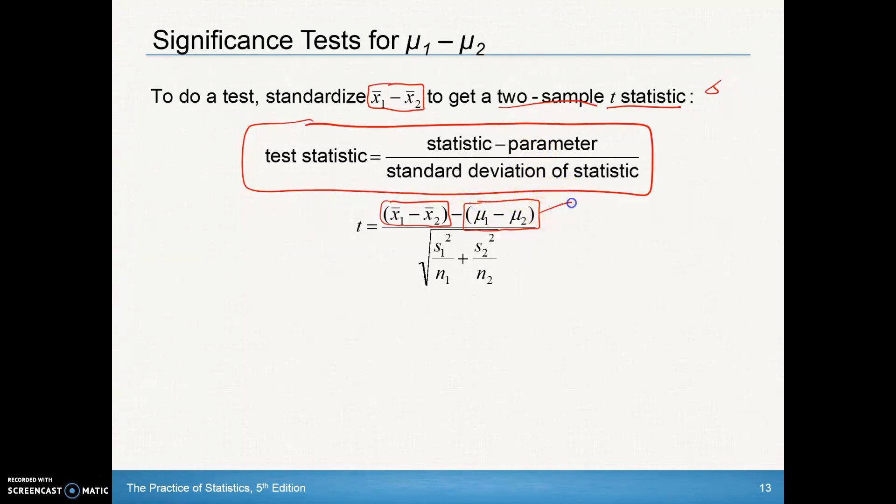In our case, it's the difference between our sample means. Our parameter is the difference between our population means. Many times this will simply just be zero because that's what our hypothesized value is—that there is no difference between those two.